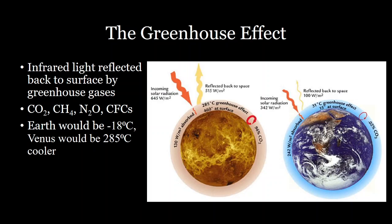The greenhouse effect is even stronger on Venus, which has an extremely thick carbon dioxide rich atmosphere. And Venus would be 285 degrees Celsius cooler than it is now if it didn't have an atmosphere. So it just goes to show that the greenhouse effect can have huge impacts on the temperature of a planet.